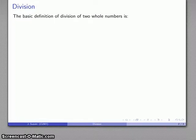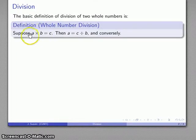So the basic definition for the division of two whole numbers is suppose I have a multiplication, a times b equal to c. Then every time I have a multiplication a times b equal to c, I also have a division a is equal to c divided by b.